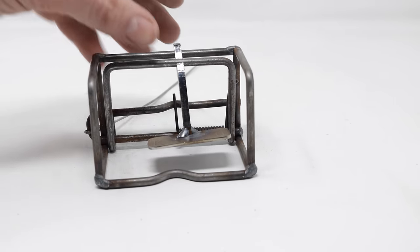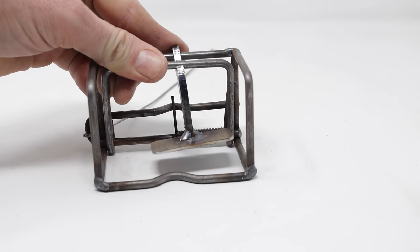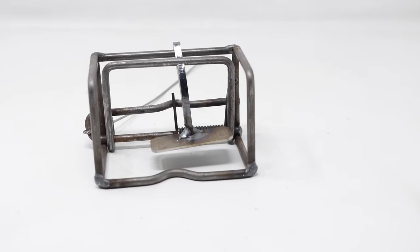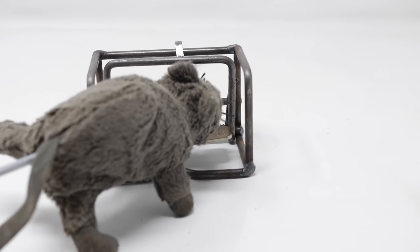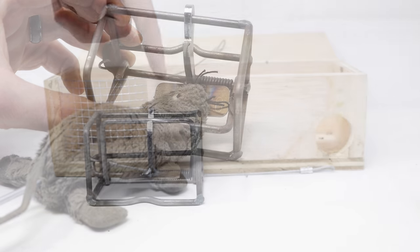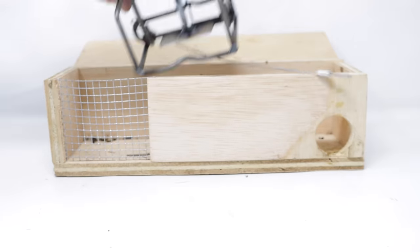You can make the trigger more sensitive by pulling it forward so it just barely grabs that kill bar. This is all ready to go for a mouse or rat to come along, smell the bait, step on the trigger, and get caught right on the head. It looks like it's going to work well. Now we're going to set up this powerful trap in the barn.